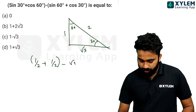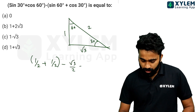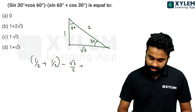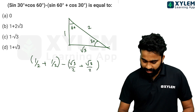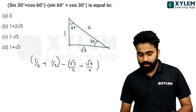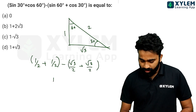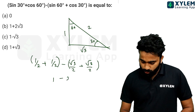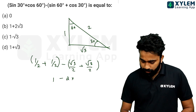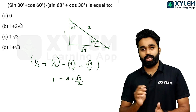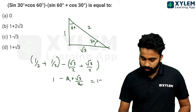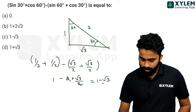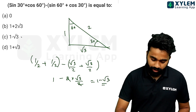Sine 60 is equal to root 3 by 2, plus cos 30, which is also root 3 by 2. So the answer is 1 minus 2 times root 3 by 2. We can cancel 2 and 2, so the answer is 1 minus root 3.